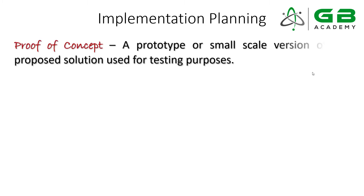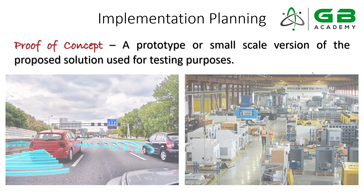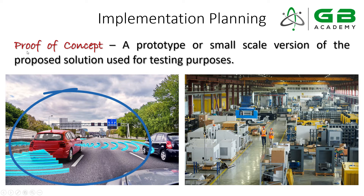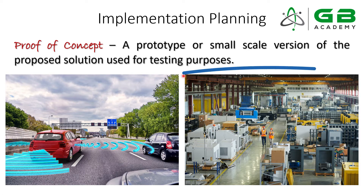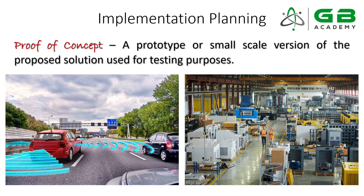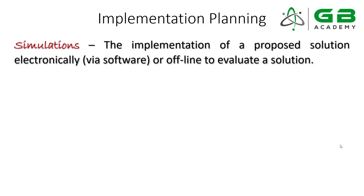A proof of concept is essentially a small-scale version of the proposed solution. Let's say your Greenbelt project is to modify or improve your product in some way — add a new feature and solve a problem. If you want to measure the effectiveness of that improvement, build a prototype — a small-scale prototype that essentially proves your concept. If you're in a manufacturing setting making a process improvement, this means implementing a small-scale version of that solution to test its effectiveness.